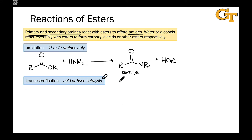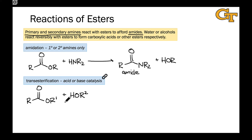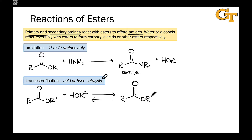The other thing worth mentioning is transesterification—turning one ester into another. If we take an ester and treat it with an alcohol whose R group does not match the alkoxy group in the original ester—so R1 in the ester and R2 in the alcohol—it's possible to imagine a substitution process taking place through nucleophilic acyl substitution, generating the other possible ester with OR2 replacing OR1. This would also give the alcohol of R1 as a byproduct.